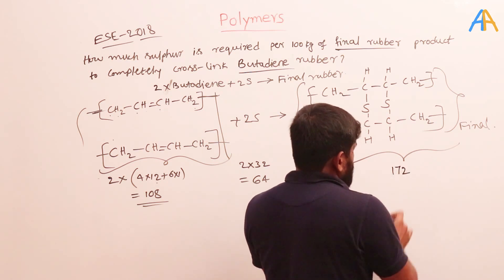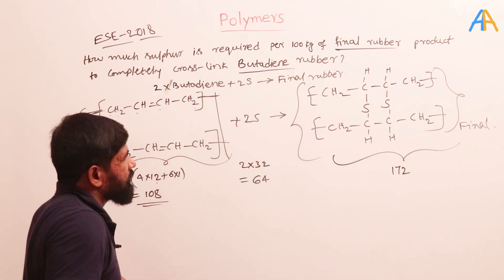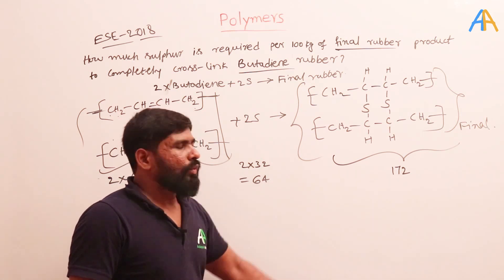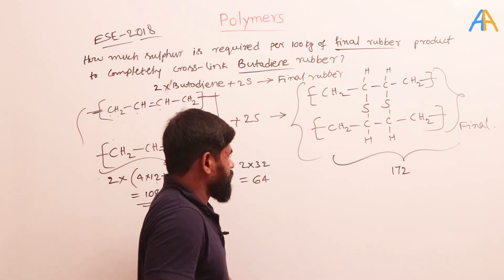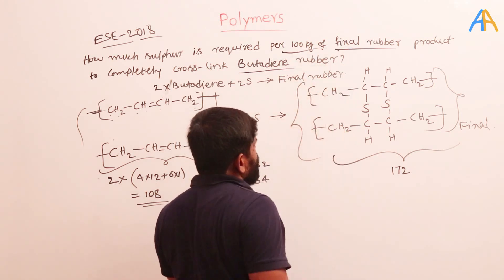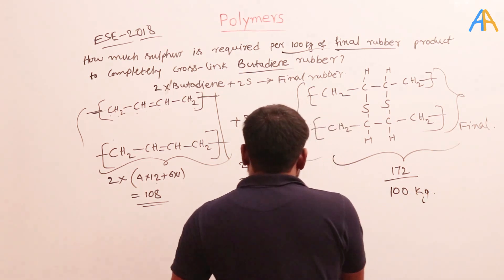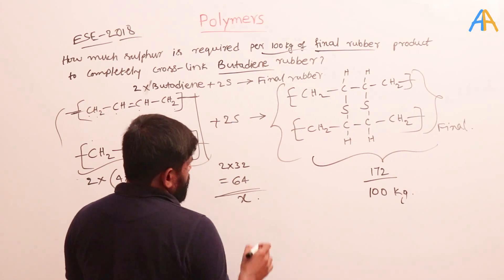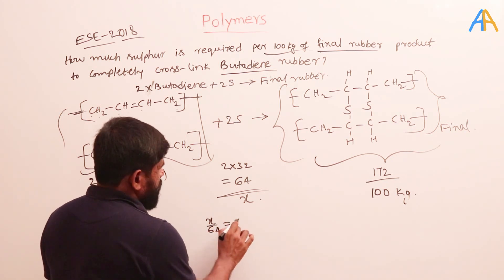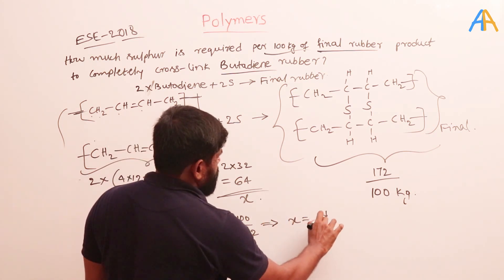This is simply an addition reaction: 108 + 64 = 172. So if we take 108 kg of two butadienes and add 64 kg of sulfur, we produce 172 kg of final rubber. But in the example problem, 100 kg of final product is given. So using proportion: x/64 = 100/172, which gives x = (64/172) × 100.